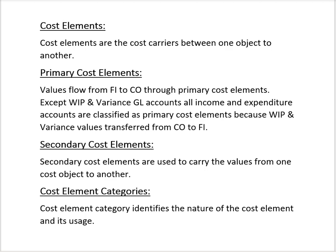In this video we are going to discuss cost element categories. Cost elements are the cost carriers between one object to another object, and there are two types of cost elements in the controlling module: primary cost elements and secondary cost elements. Initially in ECC, primary cost elements are general ledger accounts, but in S4 HANA, secondary cost elements are also general ledger accounts because all values are updated in the universal journal.